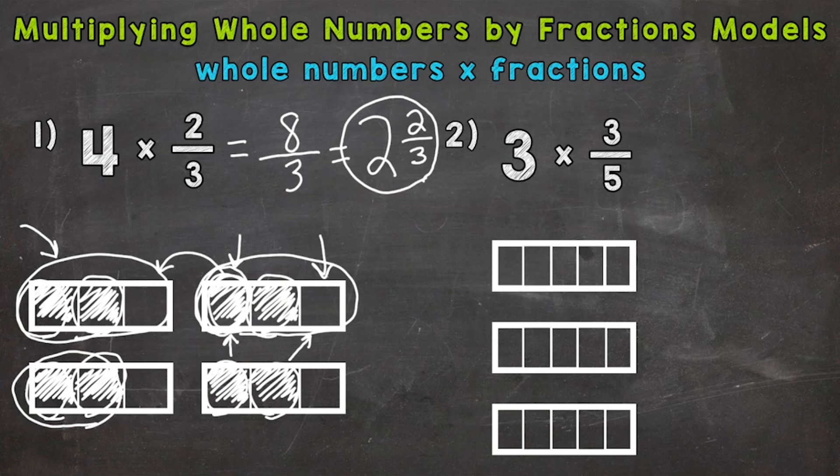So you can either go straight to that improper fraction and convert it to a mixed number or shift things around and figure out what your mixed number is going to be. Either way, that model is going to give you the same and correct answer. So let's do number two where we have three times three-fifths. So we need three groups of three-fifths.